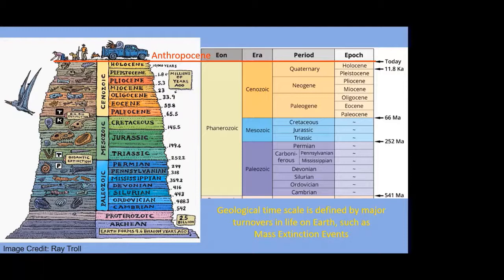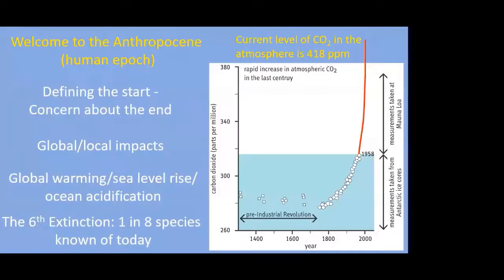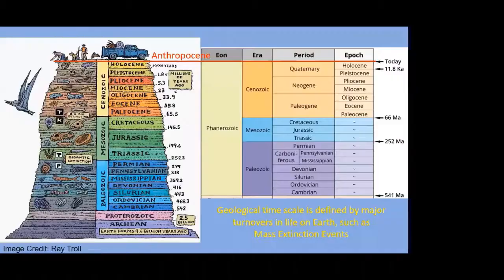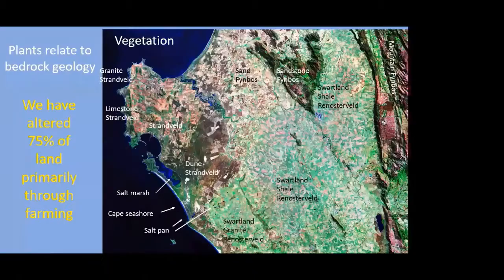I think the debate about when the Anthropocene starts misses the main point. It's more a call to think about when it might end — particularly for us. Rather than trying to define the start of the Anthropocene, we should be concerned about the future and how it might end. What I want to do in this talk is give you some sense of how the Anthropocene is expressed on the West Coast and what we can do about it — how we can make the Anthropocene last as long as possible.